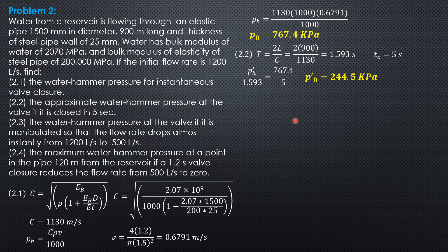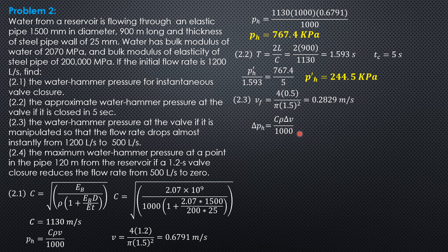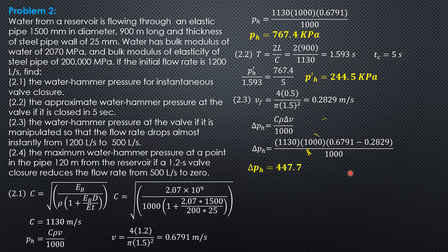For Part C, the water hammer pressure at the valve when flow drops almost instantly from 1,200 to 500 liters per second. Delta pH = C × ρ × ΔV / 1,000. The final velocity V_final = 4 × 0.5 / (π × 1.5²) = 0.2829 m/s. So delta pH = 1,130 × 1,000 × (0.6791 − 0.2829) / 1,000 = 447.7 kilopascals.